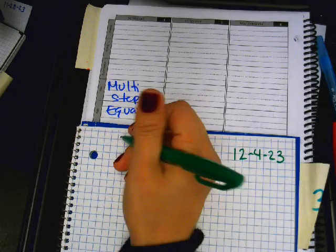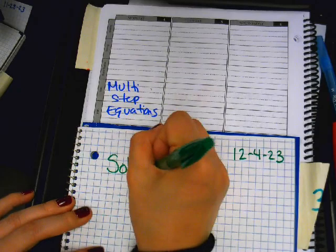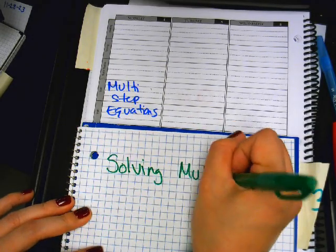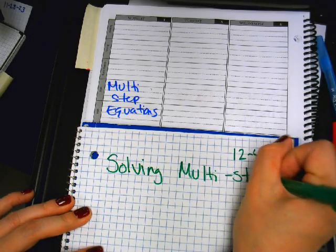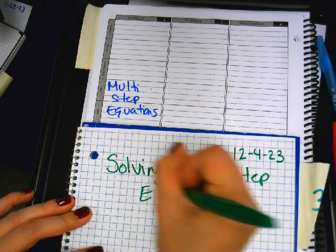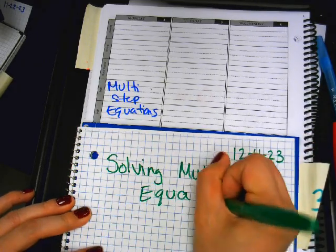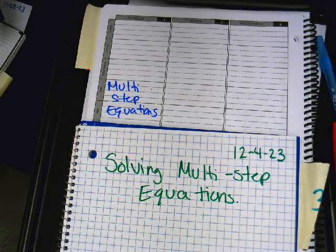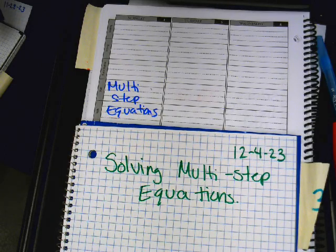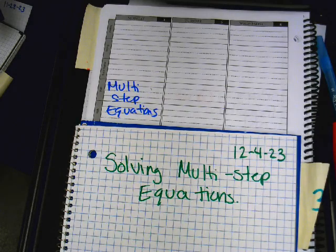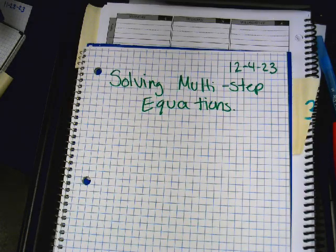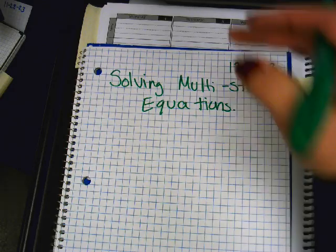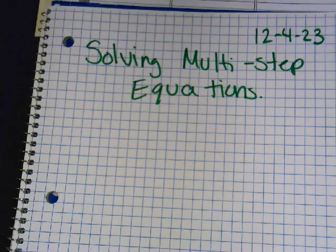So we are solving multi-step equations. They're called multi-step because it takes multiple steps to solve, not one step, not two steps, but multiple. But in reality, it's not very hard, especially if you've been understanding what we've been doing. This is just super easy.